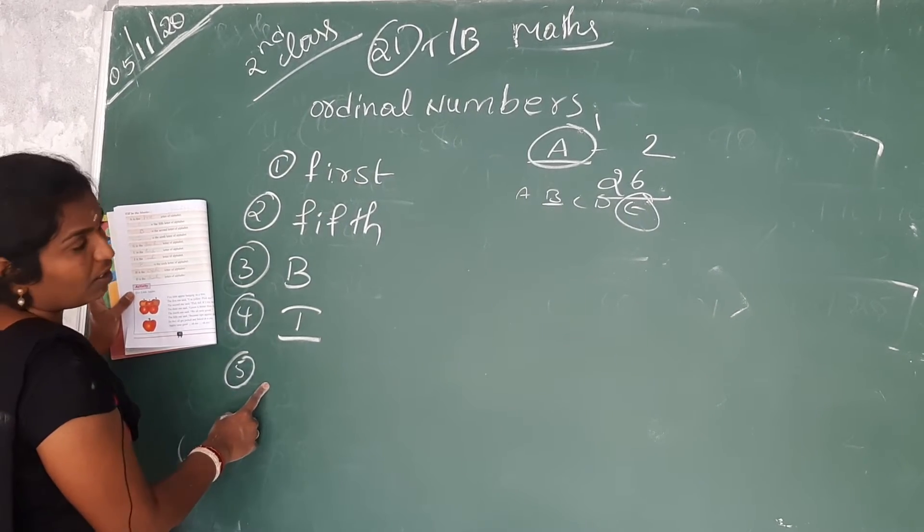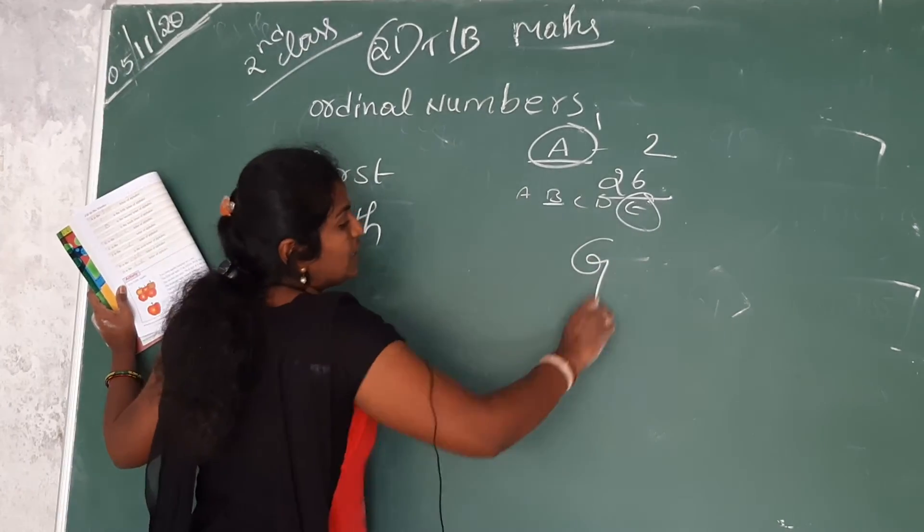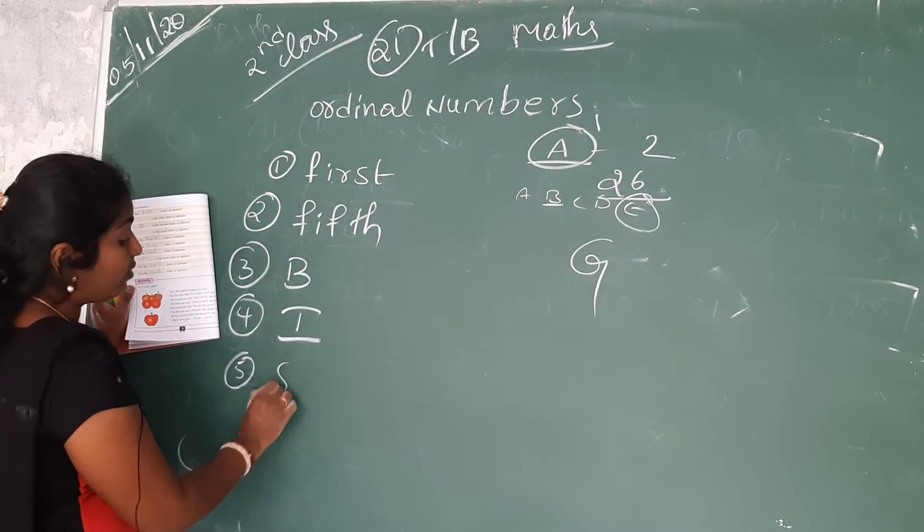Next fifth one. G is the dash letter of the alphabet. Alphabets, G is in the seventh place.